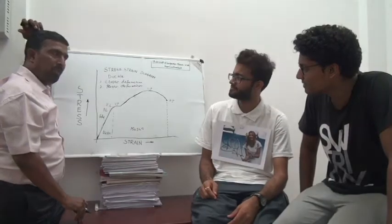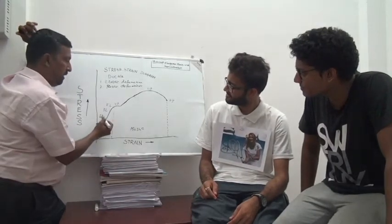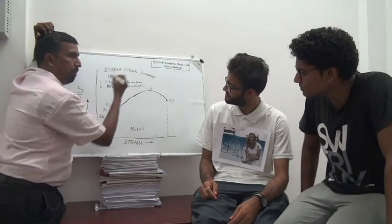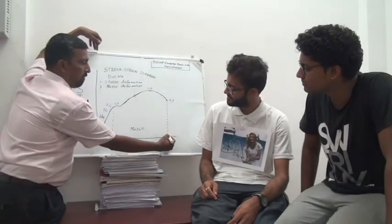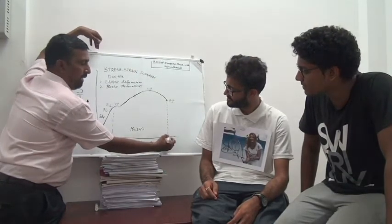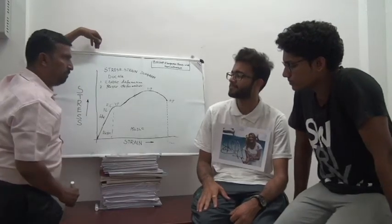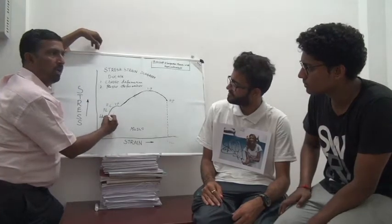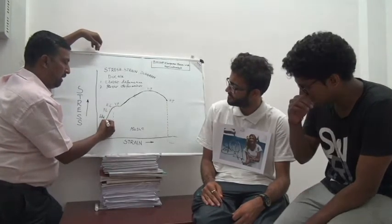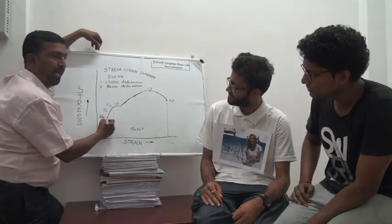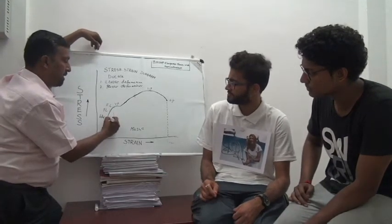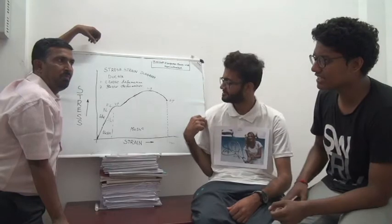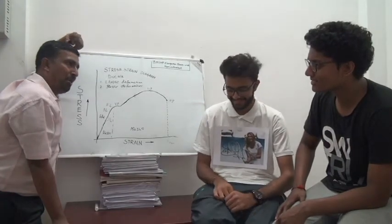In addition to Proportional Limit, Elastic Limit, Yield Point, Ultimate Point, and Breaking Point, we can also find out the strain at fracture — it is a measure of ductility. Then we can find Young's Modulus. Within the elastic limit, the ratio of stress to strain is the Young's Modulus — Y by X.